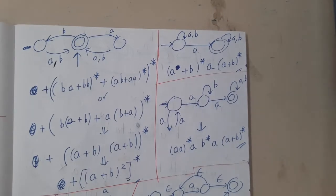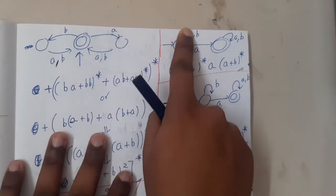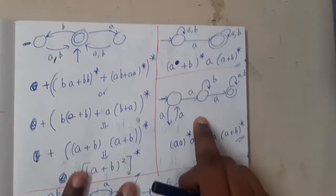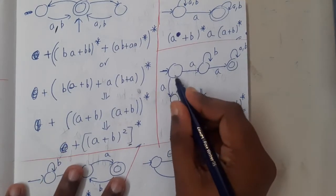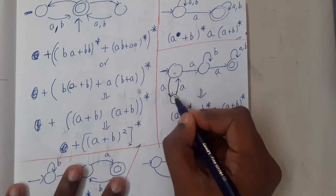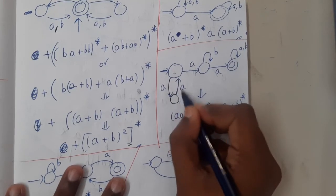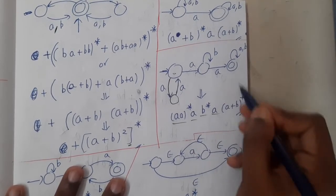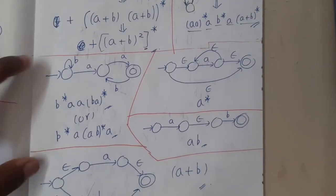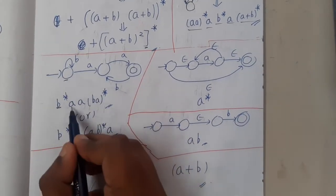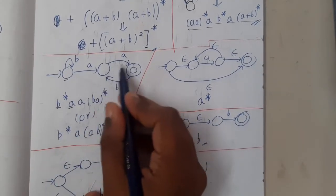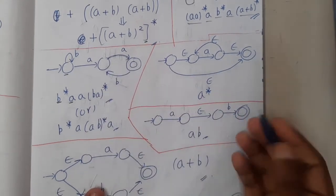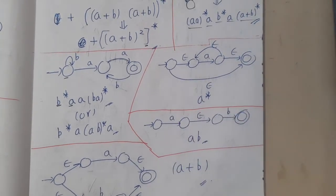Let me show the remaining examples from the book directly. This one is a loop of (a,b) — it is (a+b)*. Then 'a' is mandatory. Then again (a+b)*. Here we have a state going to another state and coming back — so that's (aa)*, meaning we can roam as many times as we want. After that, one 'a' is mandatory, then b*, then one more mandatory 'a', then (a+b)* again.